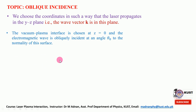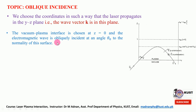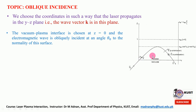As discussed in the previous lecture, the vacuum-plasma interface is chosen at z equal to zero. The electromagnetic wave is obliquely incident at an angle theta_0 to the normal of the surface. This is the incident laser or electromagnetic wave lying at z equal to zero, and the angle theta_0 is measured relative to the normal of this plasma slab.